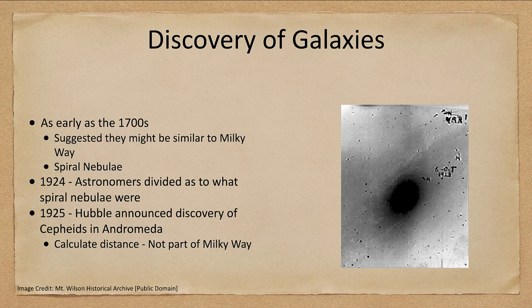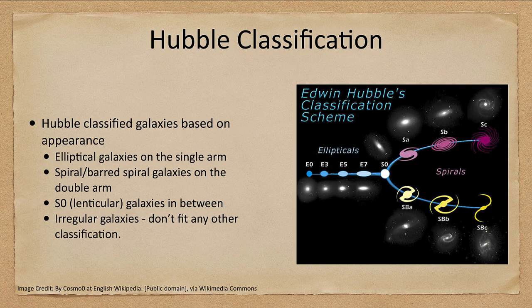Hubble also worked on a classification scheme for galaxies and he classified them based on their appearance — what they looked like. This is not all that different from how stars were originally classified based on the appearance of their spectra.